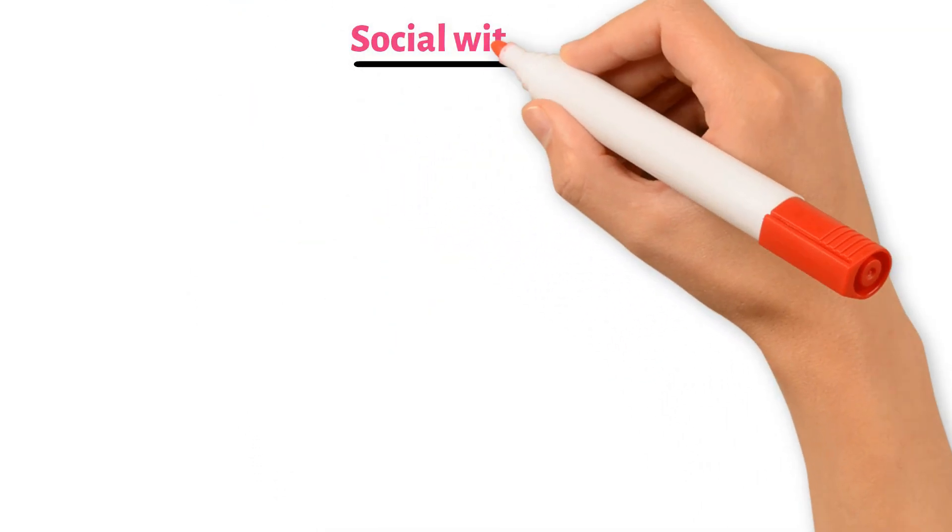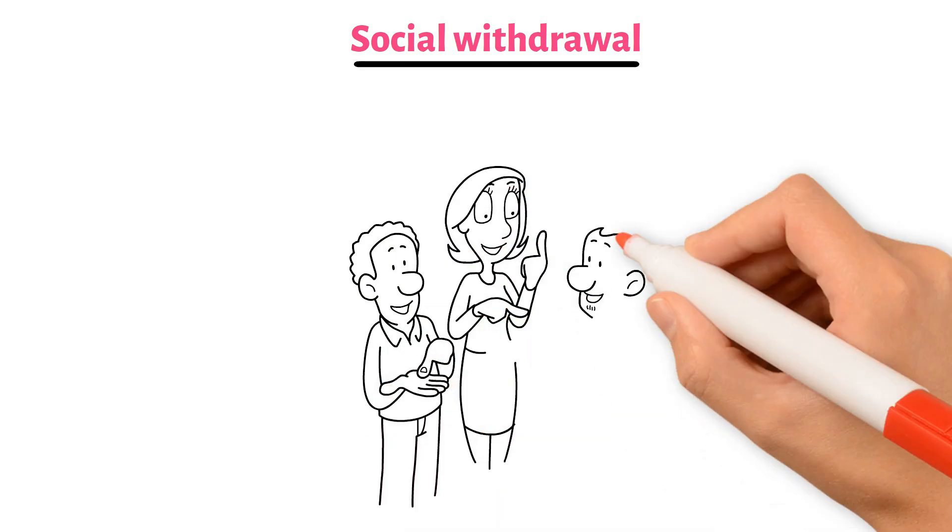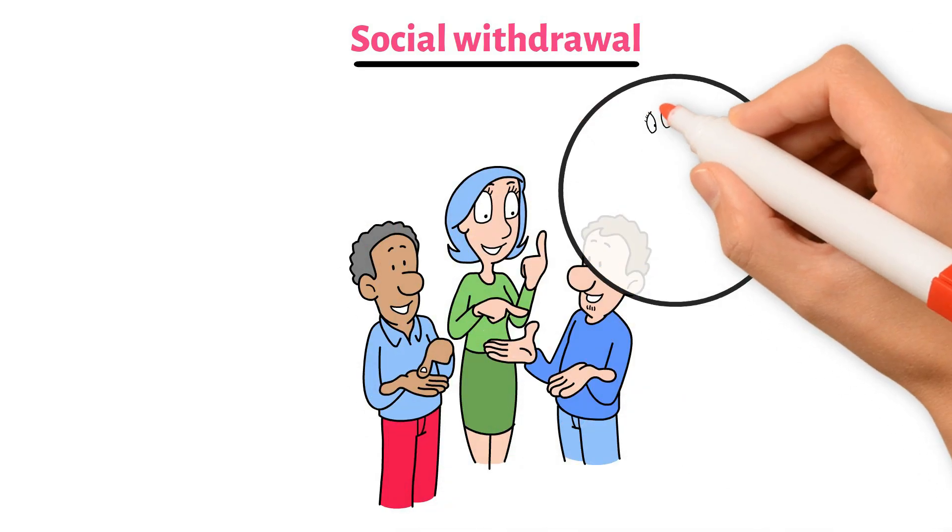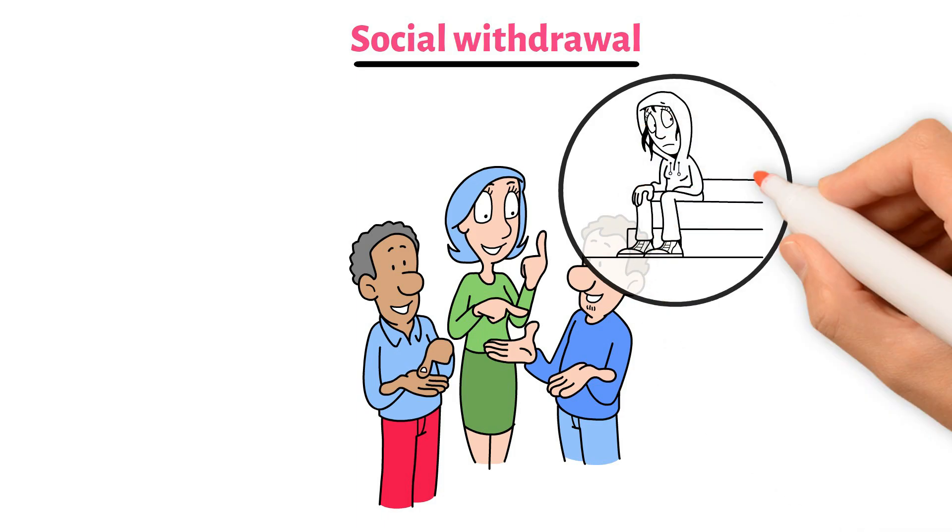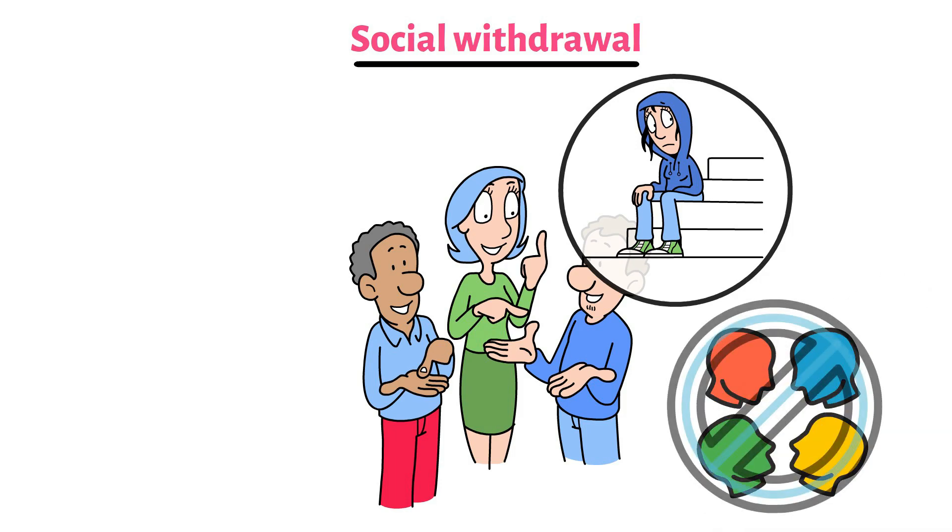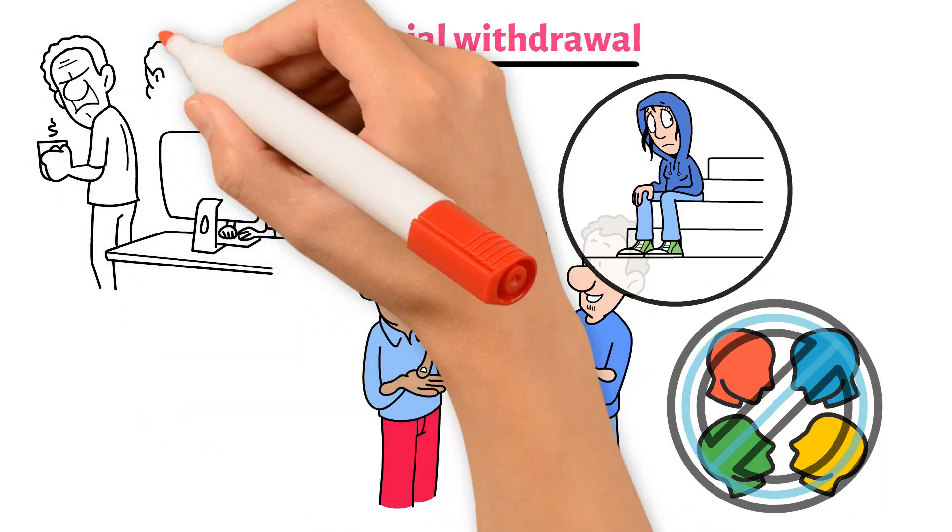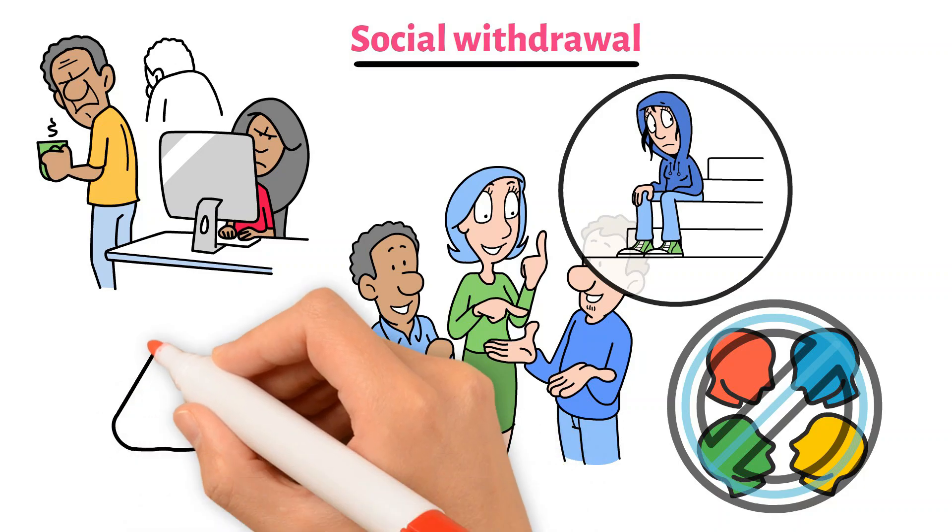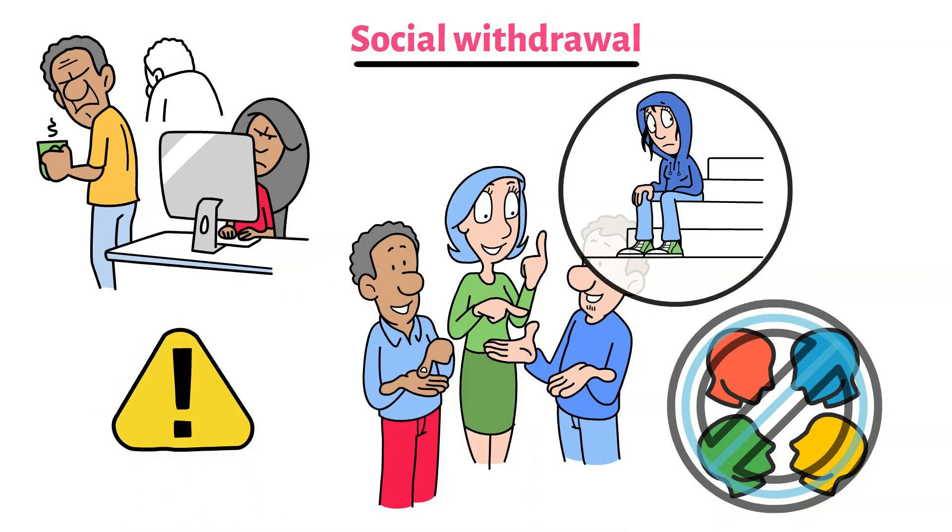Next, social withdrawal. This means pulling away from friends, family, and social activities. A person might isolate themselves, spending most of their time alone, and may stop communicating with others. This withdrawal is often because they find it hard to interact with people or because they're trying to protect themselves from perceived threats.